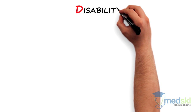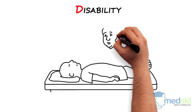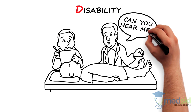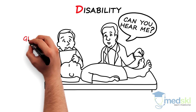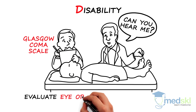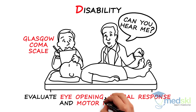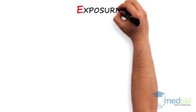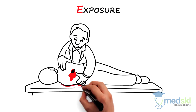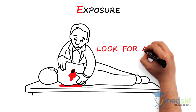D — disability. A basic neurologic assessment will help you calculate a GCS, or Glasgow Coma Scale. It evaluates eye opening, verbal response, and motor response on a universally understood 15-point scale. E — exposure. The patient should be completely undressed to look for all injuries.